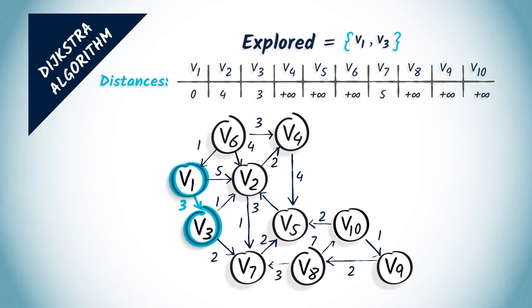A new iteration begins. Now, we select the next unexplored vertex with the smallest distance, which is v2. We add it to the set of explored vertices.